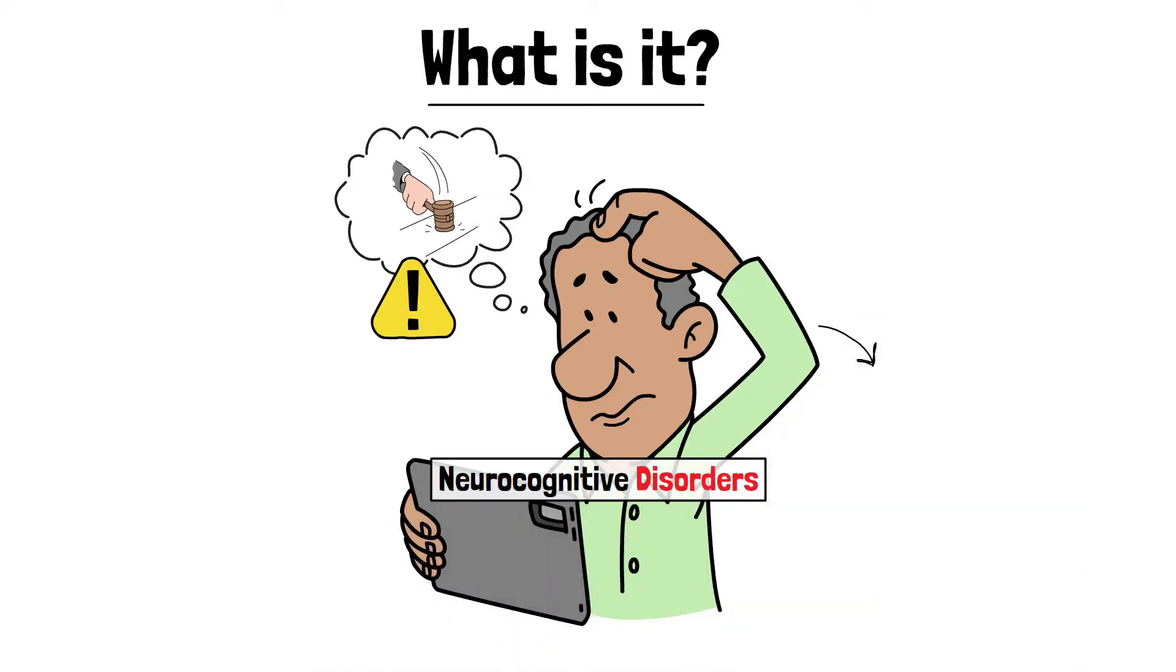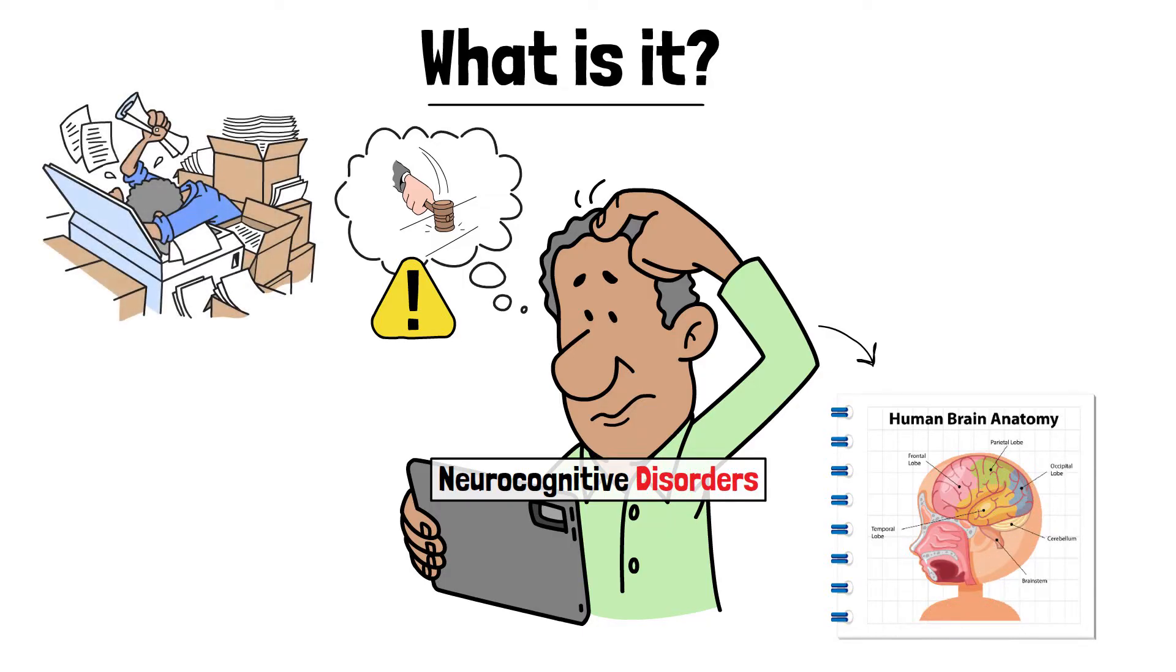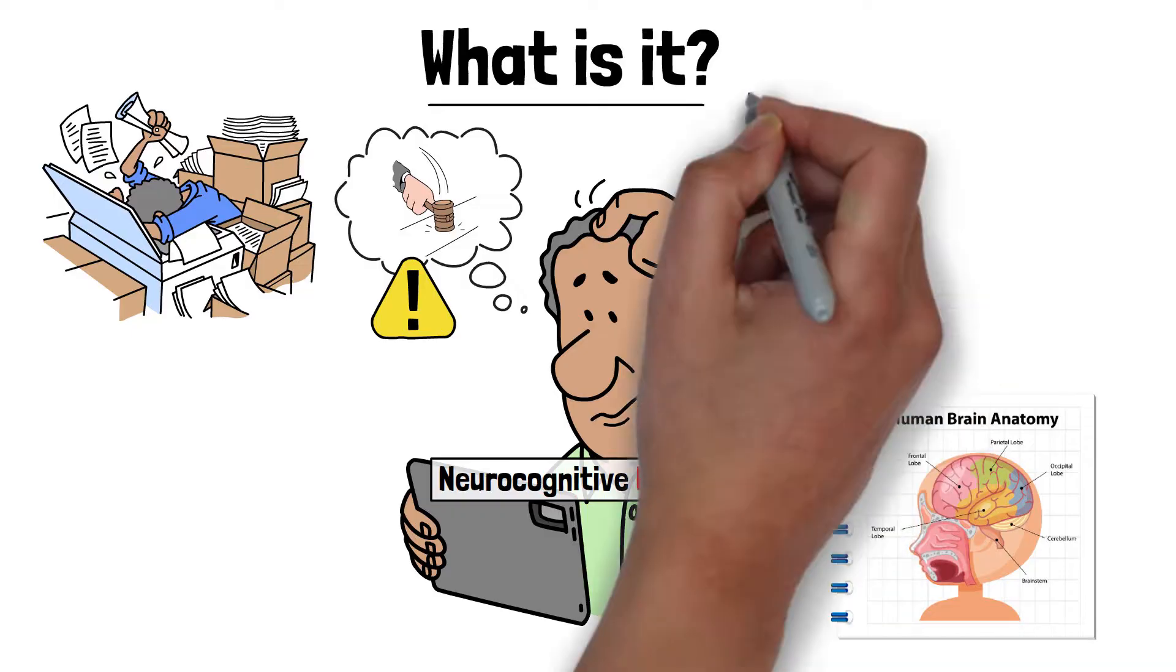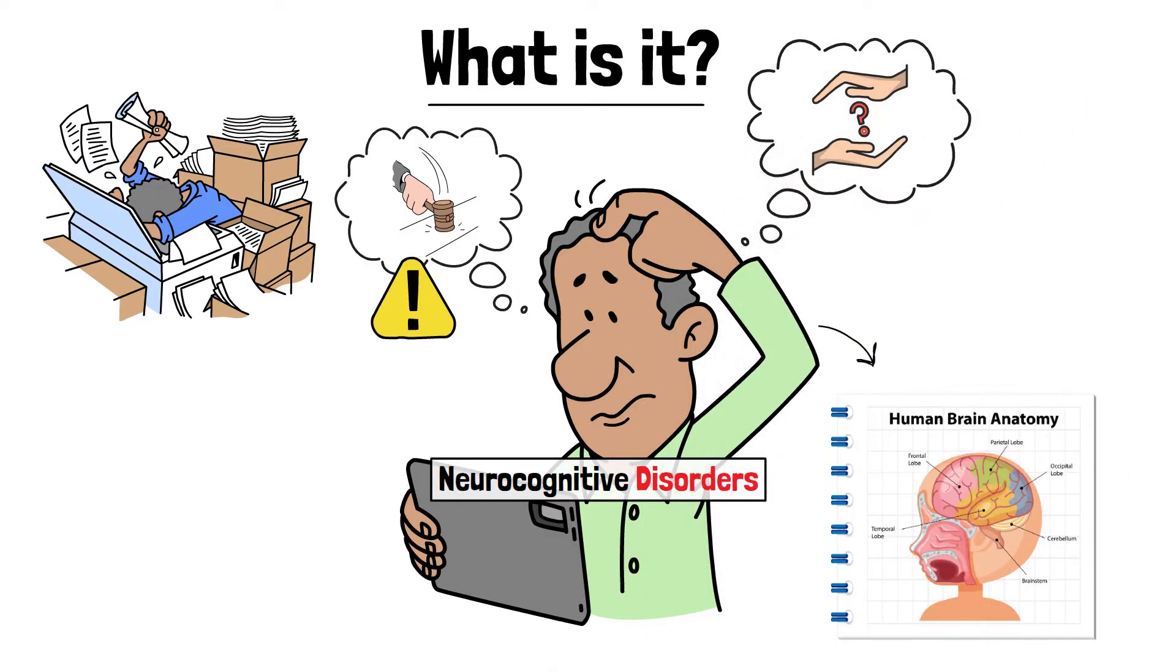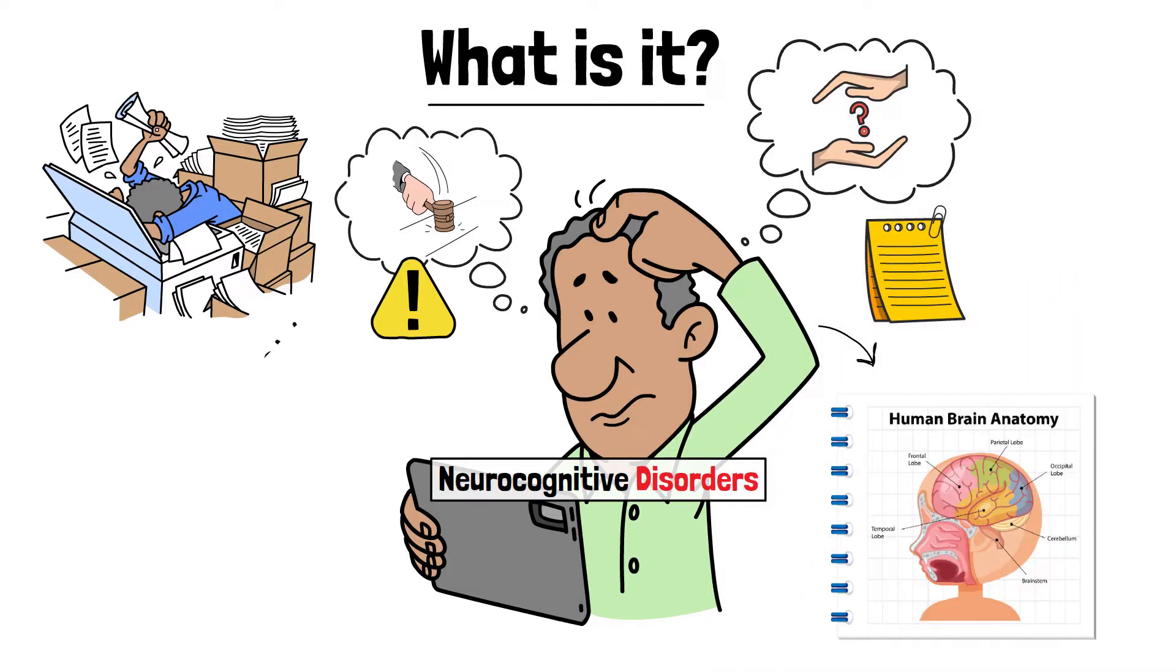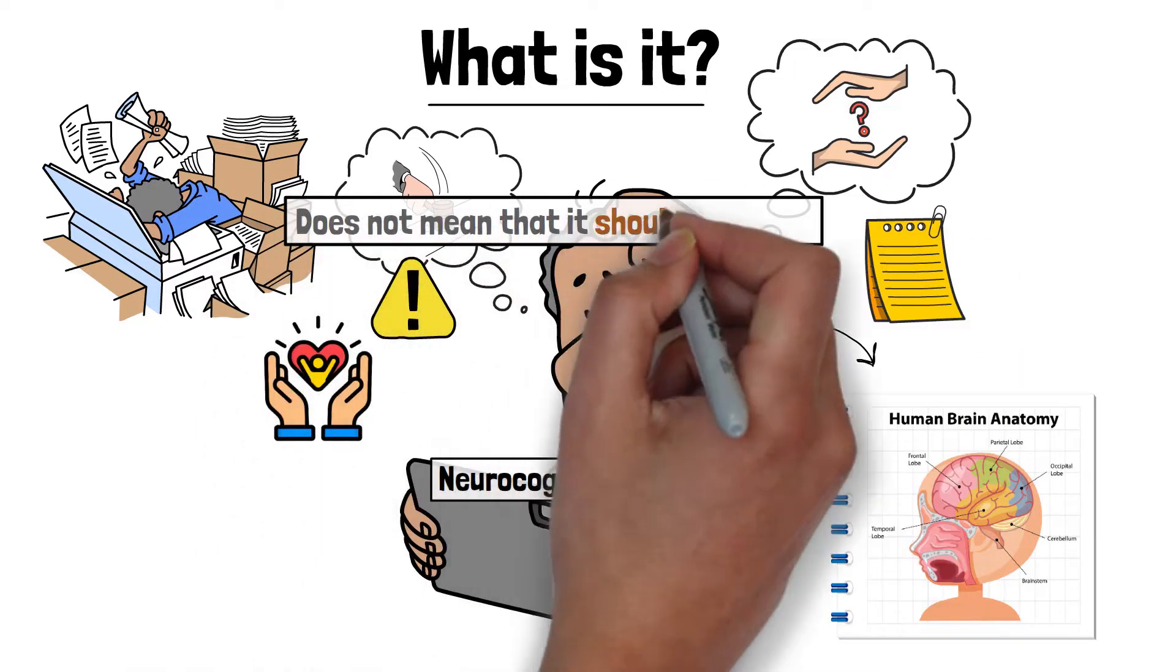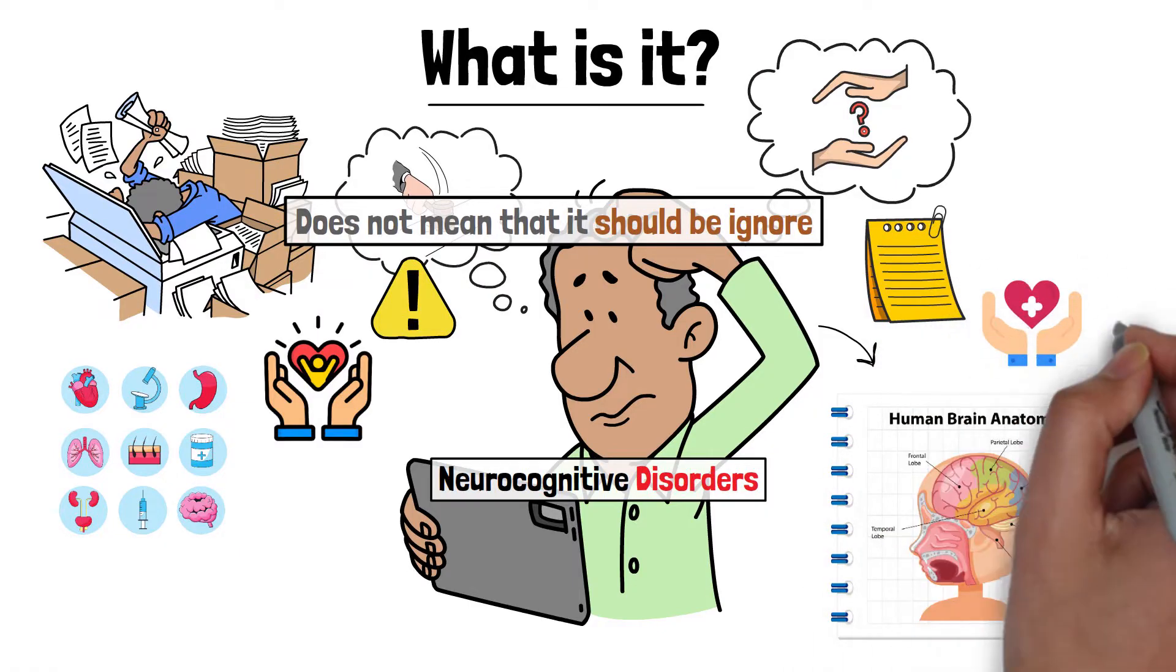That means those parts of the brain that control our ability to think and understand, when they do not work properly, then the person faces many kinds of problems. In this, the person has some difficulty in remembering everyday things or in doing some work. However, they are capable of living their normal life. This does not mean that it should be ignored. With the right recognition and treatment at the right time, a person's life can improve.